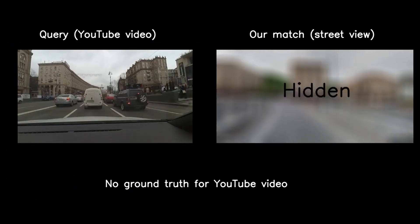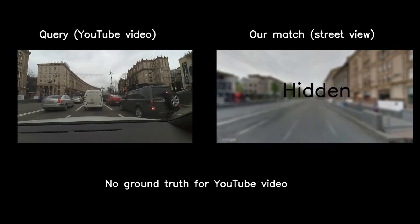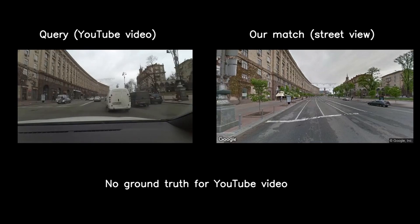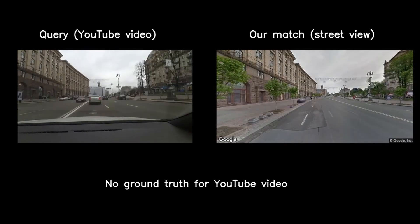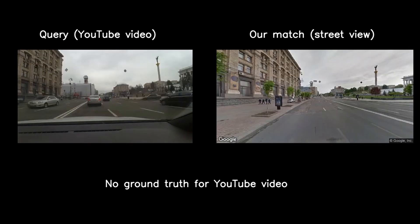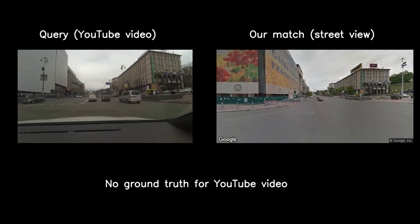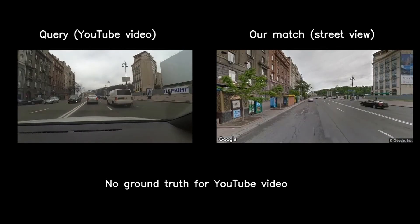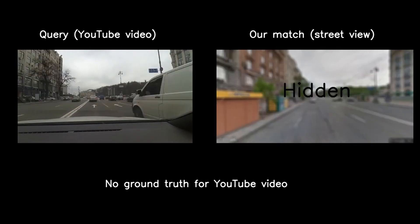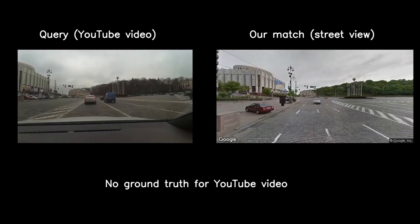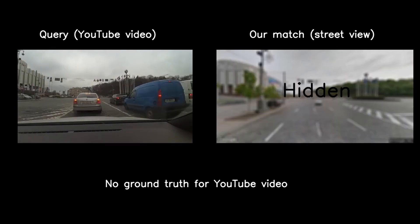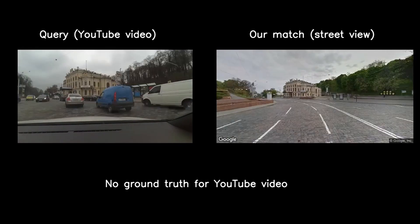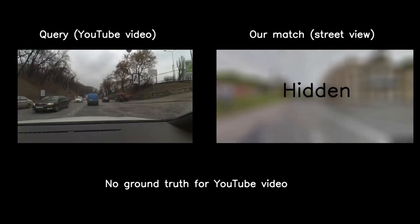Moreover, our system is independent from the camera setup. To show that, we selected a random YouTube video filmed from a car and matched it against Google Street View images extracted at the city scale. There is no ground truth available for the YouTube video.